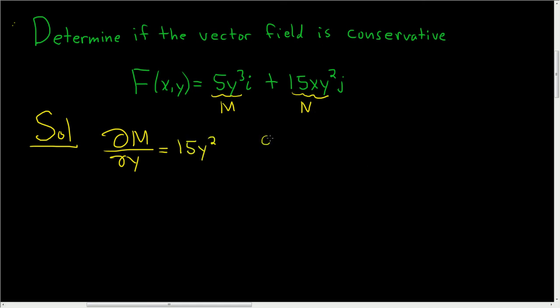And over here, you compute del N, del X. And so we're treating the Y as constant, so we just get 15 Y squared.